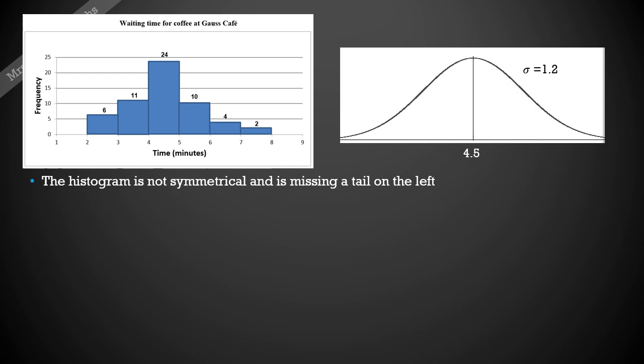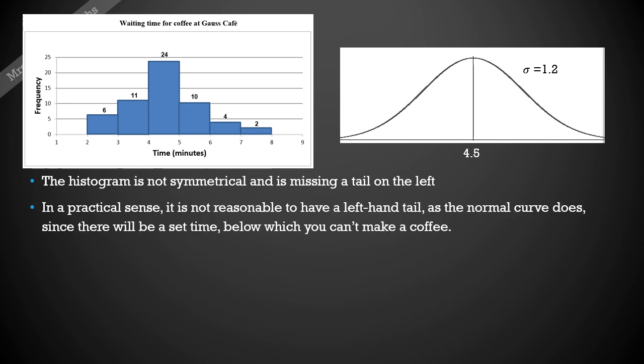But for the purposes of showing you how this could go, I'm going to show you both ways. First of all, we can look at the histogram and say it's not actually symmetrical. It's missing a bit of a tail on the left, so it doesn't match up to the normal curve in that way which is symmetrical.